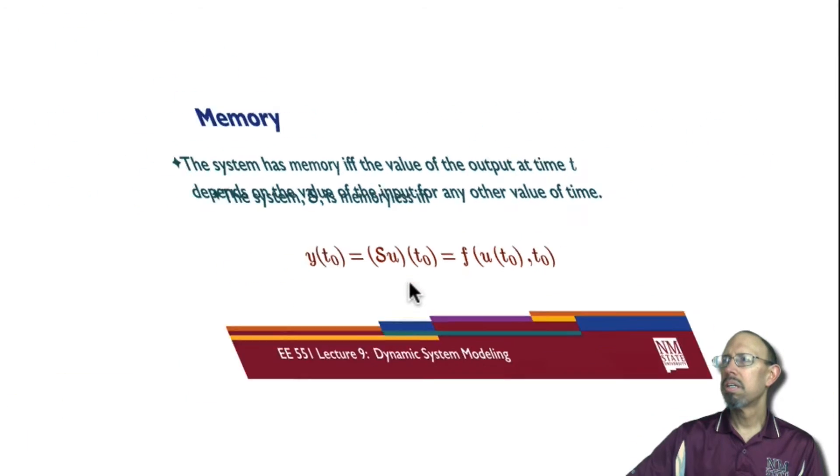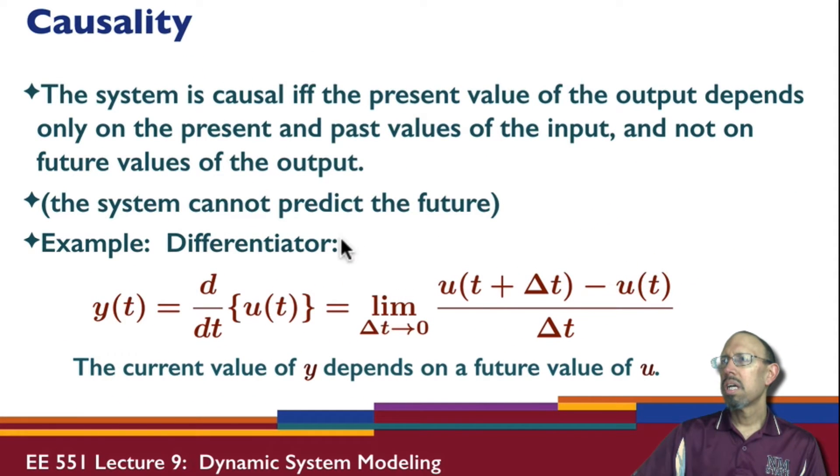A system is causal if and only if the present value of the output depends only on the present and past values of the input. So obviously, if a system is memoryless it is also causal, but a system can be causal and not memoryless.